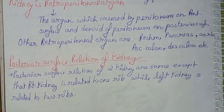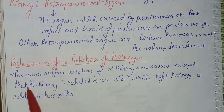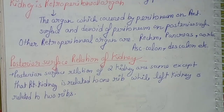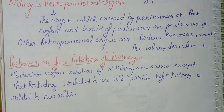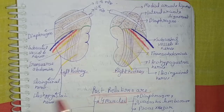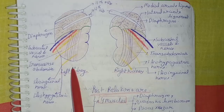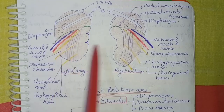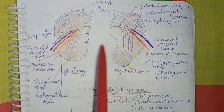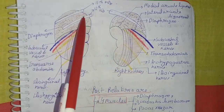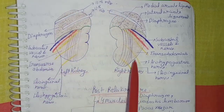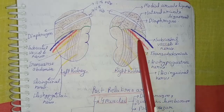Coming to the posterior surface relations of the kidney: the posterior relations of both kidneys are the same, but there is one difference — the right kidney is related to one rib (12th rib only), while the left kidney is related to two ribs (11th and 12th rib). All other posterior surface relations are the same for both kidneys.